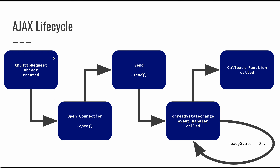The life cycle is: create an XMLHttpRequest, open a connection, populate and send it, and then the `onreadystatechange` event handler is called for states 0, 1, 2, 3, and 4. When we hit state 4, we call the callback function.